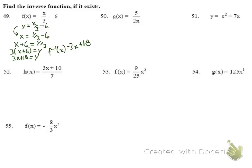For number 50, write y = 5/(2x), switch x and y to get x = 5/(2y). Multiply both sides by 2y, then divide by 2x, and the inverse of f(x) equals 5 over 2x.